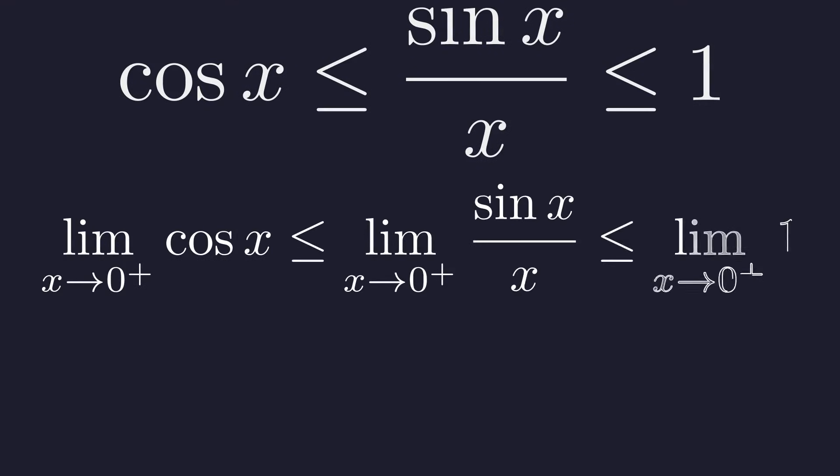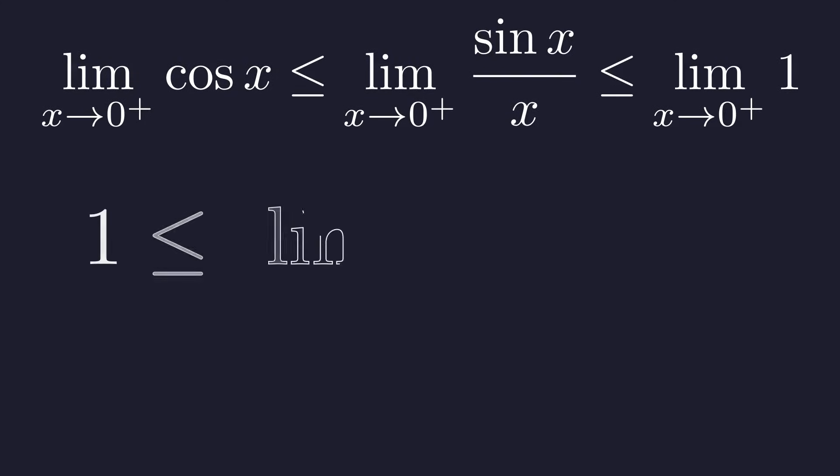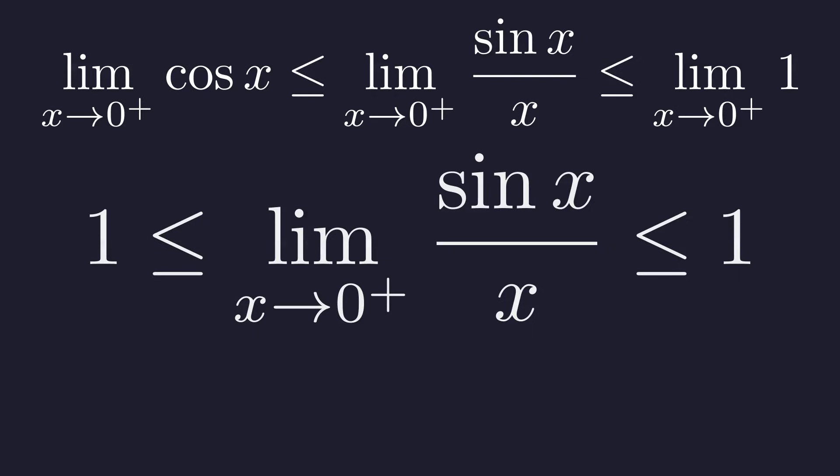Now we apply the squeeze theorem by taking the limit as x approaches zero from the right for all three parts. The limit of cosine of x is one and the limit of one is one. This proves that the right-sided limit is one.